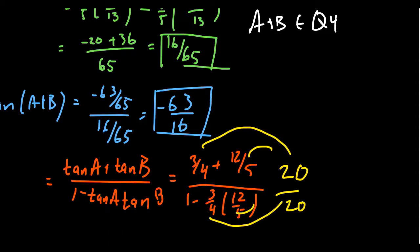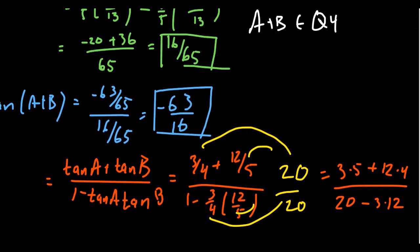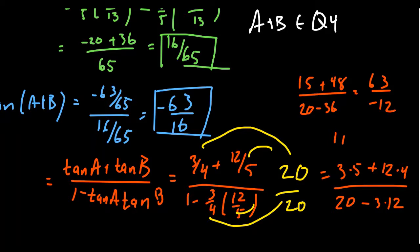Distributing: on the top you get 3 times 5 plus 12 times 4; in the denominator you get 20 minus 3 times 12. That simplifies to 15 plus 48 over 20 minus 36, which is 63 over negative 16 — agreeing with the answer we had previously. So the angle sum identity for tangent definitely works, and it's good to use if you have the tangent values. But if you've already done cosine and sine, the easiest way to get tangent is to use the ratio identity.